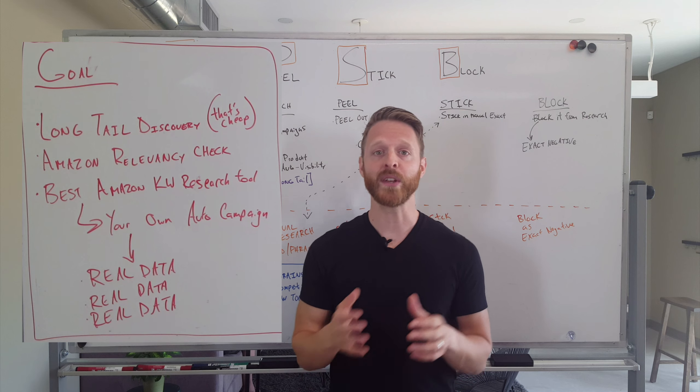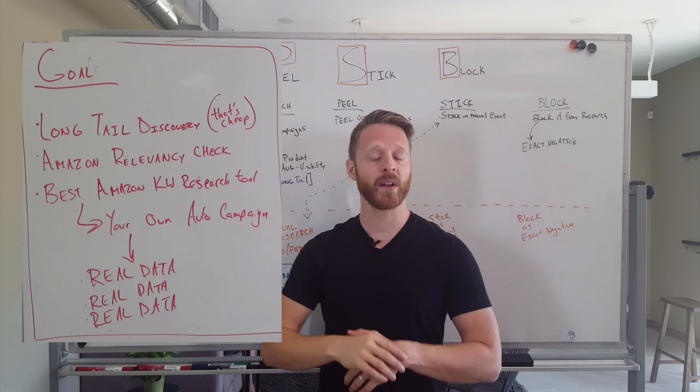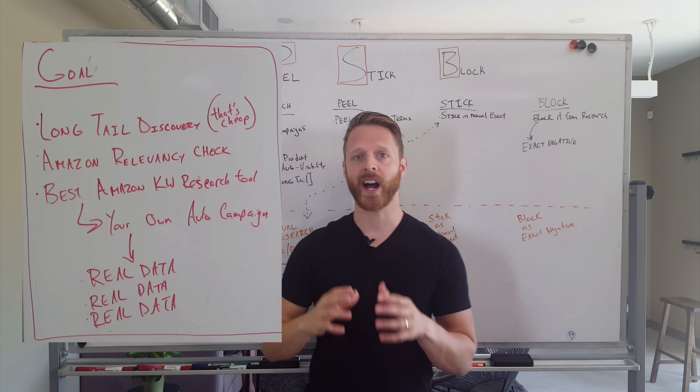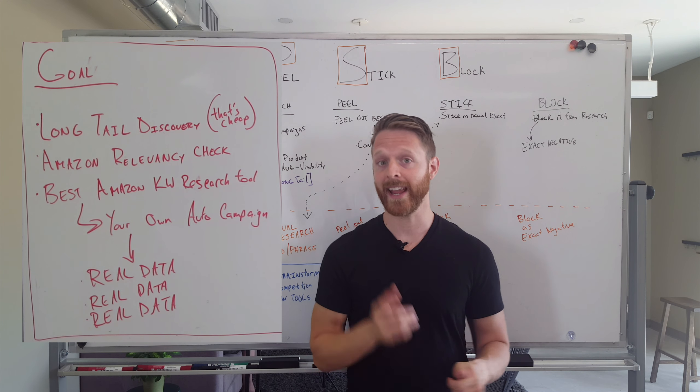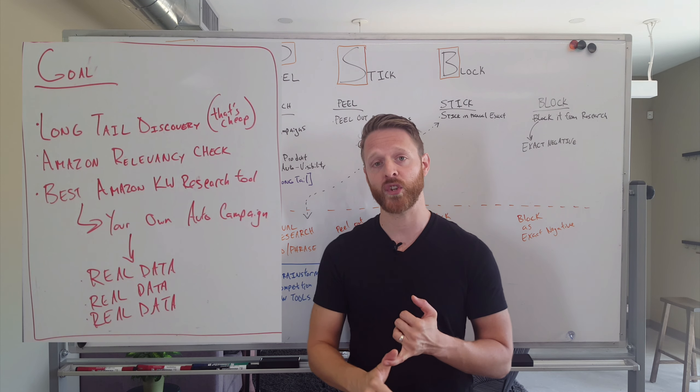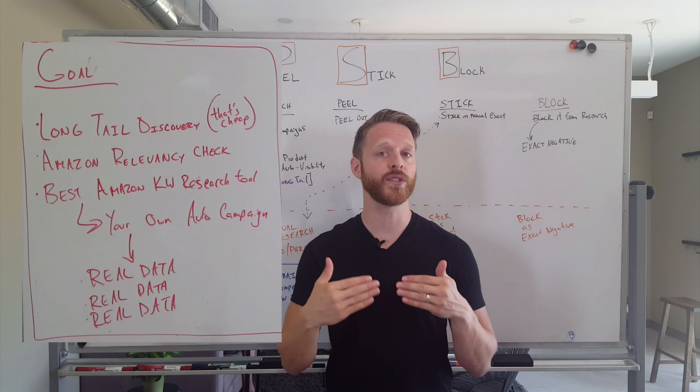The first thing that we want to do with this strategy called Research, Peel, Stick, and Block is we want long tail keyword discovery. We want to find all of the obscure, high converting, low competition terms that people are searching for our products, and we want to do it in a very time efficient and inexpensive way.